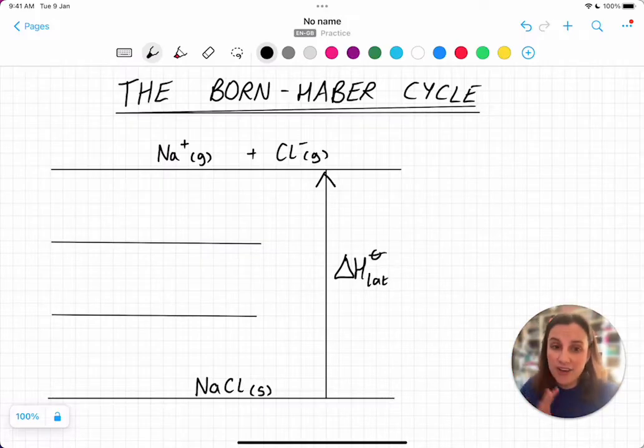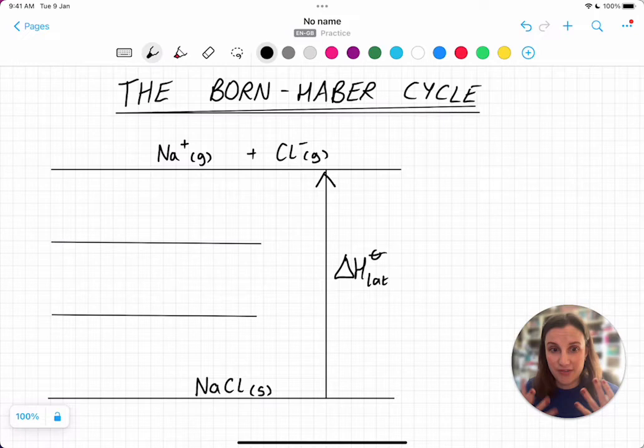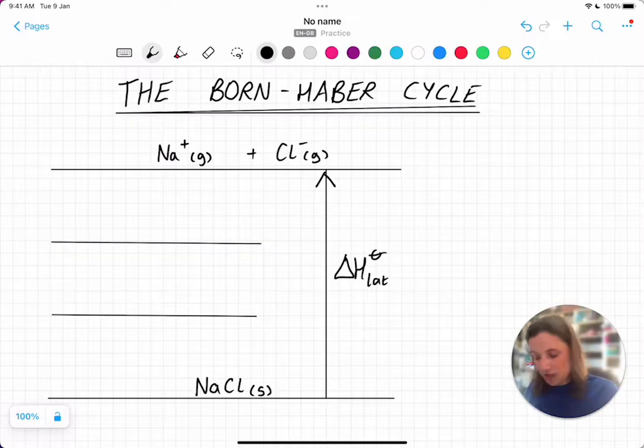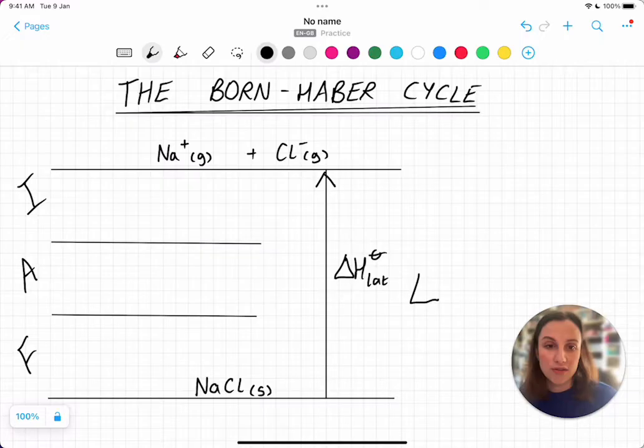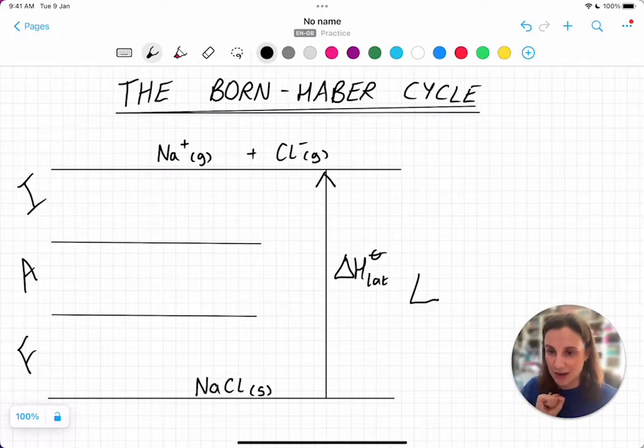I find the easiest way to remember how a Born-Haber cycle looks is something called the FAIL technique, which is all over the Internet. We can label it like this and you'll see what it means in a second. The L is over here and it stands for that lattice enthalpy that we've just put into our diagram.